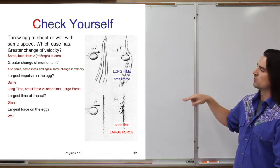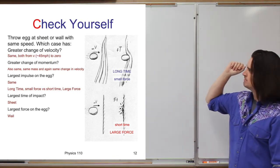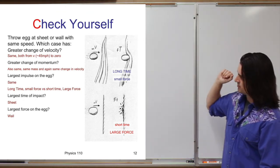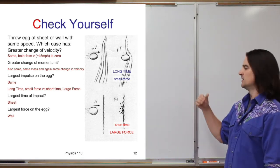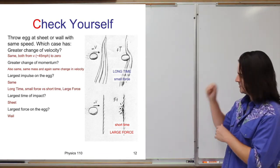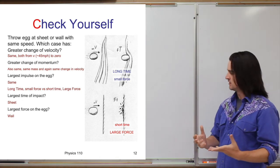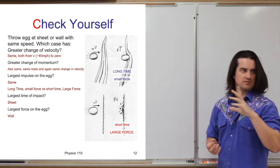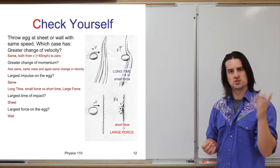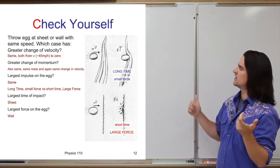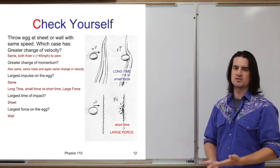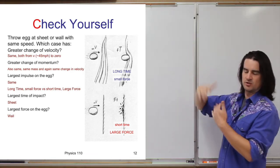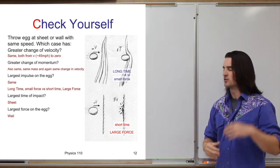Which has the longer time of impact? That's the sheet — it has a big time for the impact. Which has the larger force on the egg? That's going to be the wall — a very short impact time means the same impulse applied over a shorter time period, so the force being applied is much larger. Essentially it's the force that's the destructive thing. Stopping each egg: they start with the same momentum, end with the same momentum, change their momentum by the same amount. The difference is: with the sheet, we apply the impulse with a very small force over a longer time; with the wall, the force is very large and the time is very short.